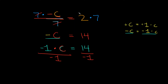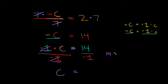Now let's simplify. We have the same number on top and on the bottom — negative 1 and negative 1 — so these cancel each other out. All we're left with on this side is positive c. That's going to be equal to 14 over negative 1. 14 divided by 1 is 14, and a positive number divided by a negative number is negative, so we have negative 14. So c is equal to negative 14.